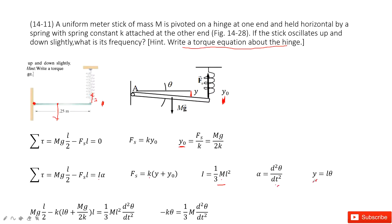Now we need to express Y. Since the stick rotates through angle theta with the spring attached at length L, we can treat Y as an arc: Y equals L·θ. We substitute all known quantities into the equation — Mg·(L/2), and the spring force K times (Y + Y₀) with Y₀ substituted in. The moment of inertia is (1/3)ML², and alpha is the second derivative of theta.